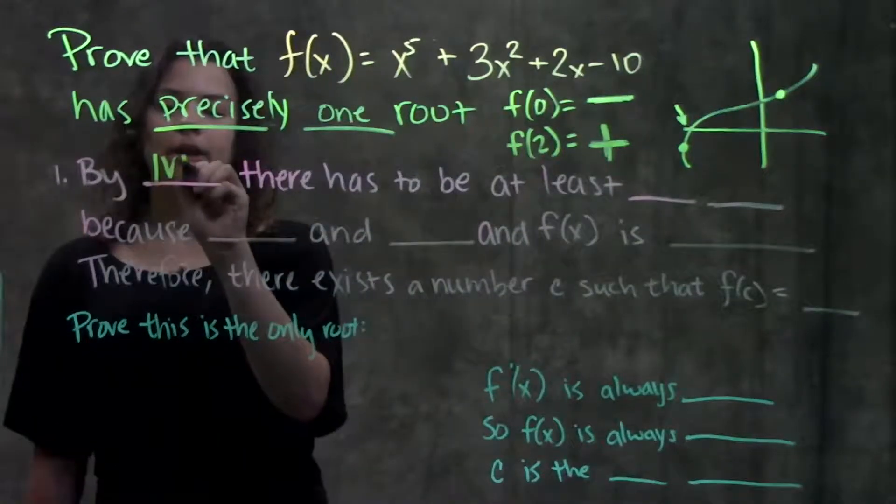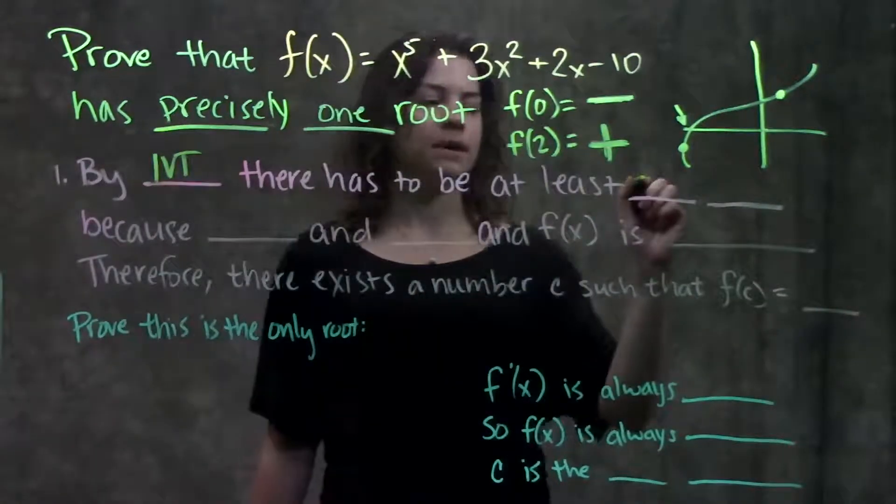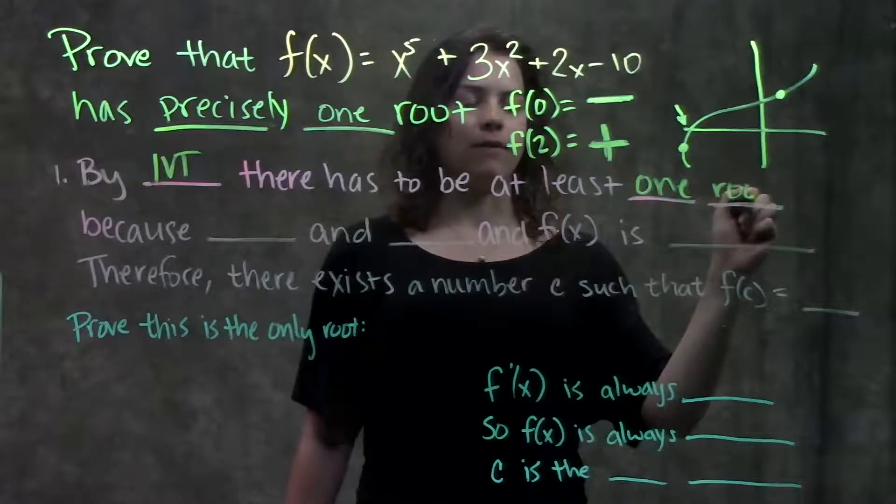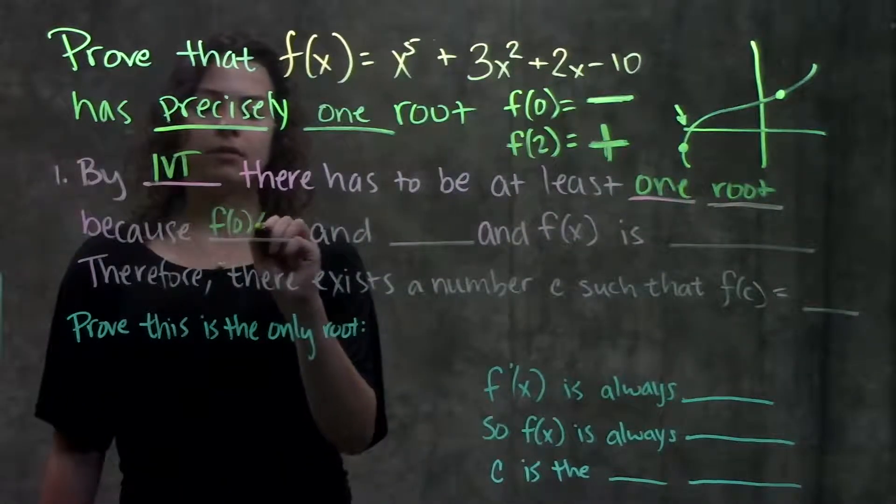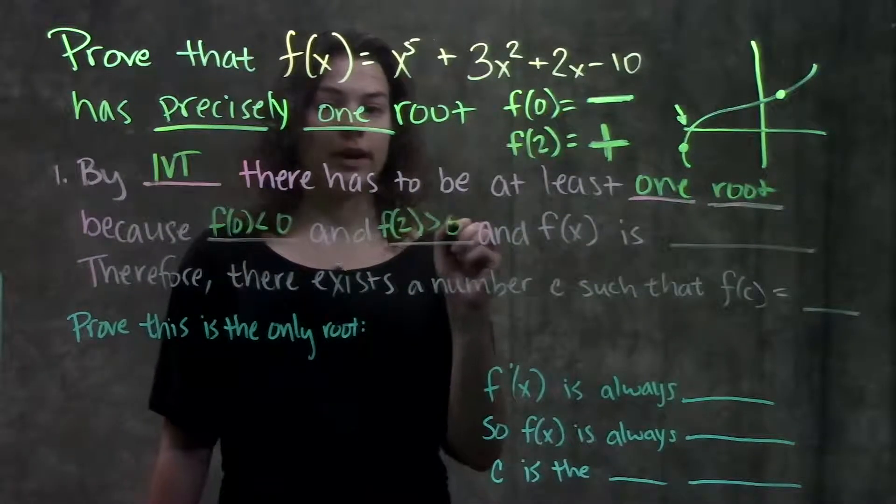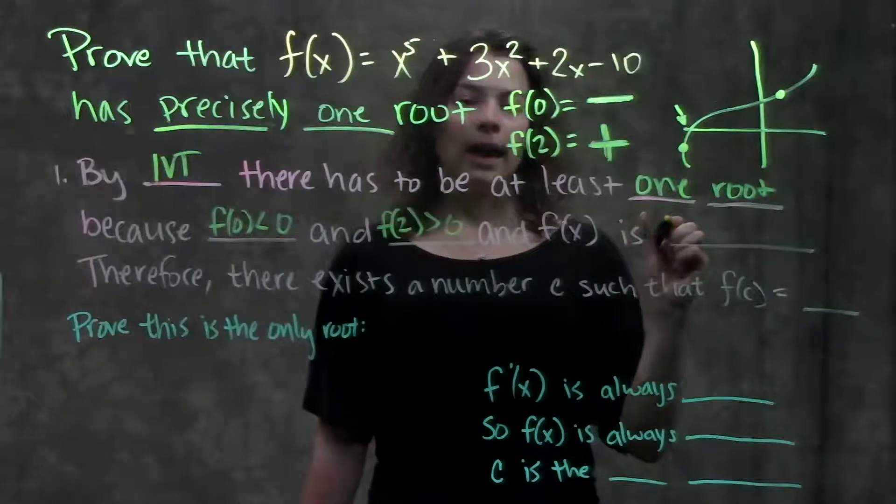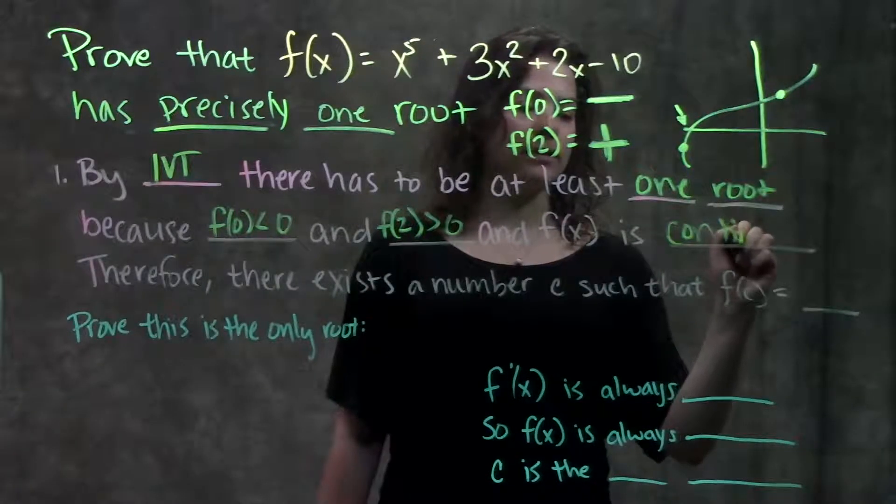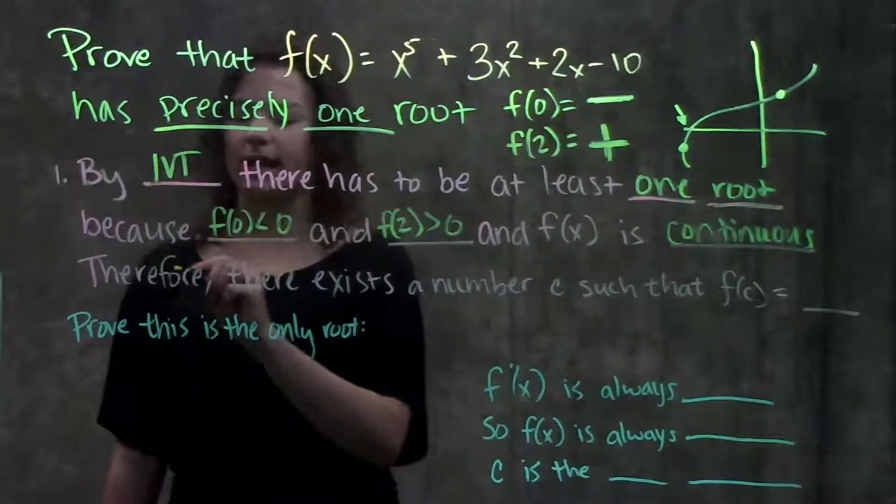We can say by intermediate value theorem there has to be at least one root of the function because f(0) is less than 0—it's negative—and f(2) is greater than 0—it's positive—and f(x) is continuous, so we know somewhere in the middle it has to cross the x-axis.